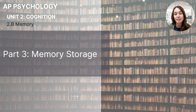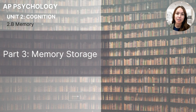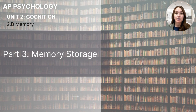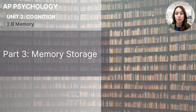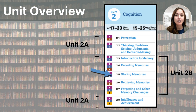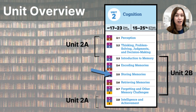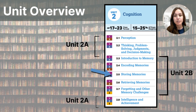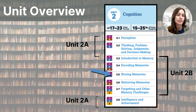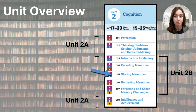Hi everyone. This video is part three of the 2B series on memory and the cognition content for AP Psychology students. This particular video will focus on memory storage — the third in a set of five on memory — focusing on how information is kept and retained in the mind over different spans of time.